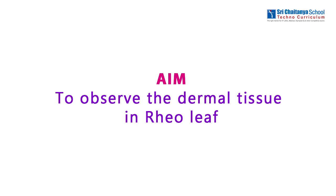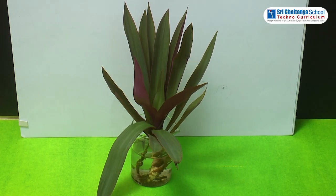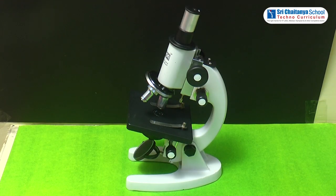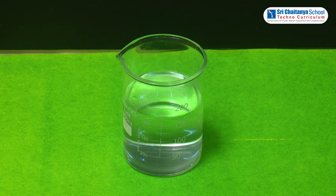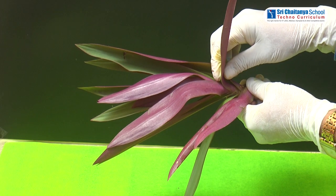The aim of this experiment is to observe the dermal tissue in a real leaf. Apparatus required for this experiment: a real leaf, glass slides, a microscope, water, and cover slips.